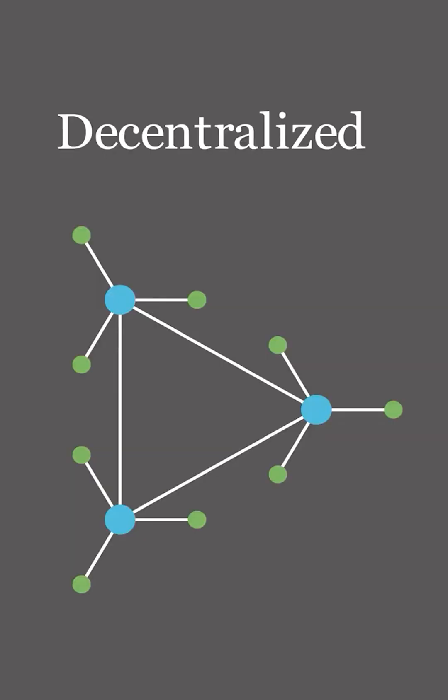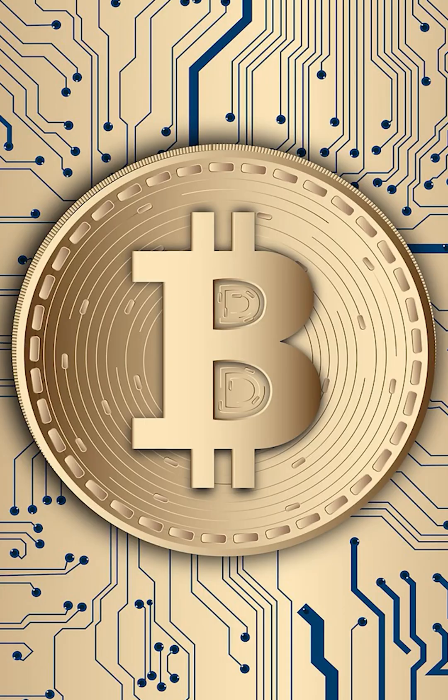In decentralized systems, decision-making authority, control, and data storage are distributed across multiple nodes. In such systems, participants have greater autonomy and resilience, as there's no single point of control or failure. If a single node goes offline or encounters an issue, other nodes can seamlessly take over its responsibilities, ensuring the continued operation of the network. One example of such a system can be blockchain technology.